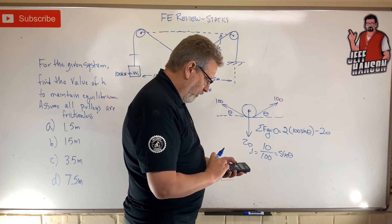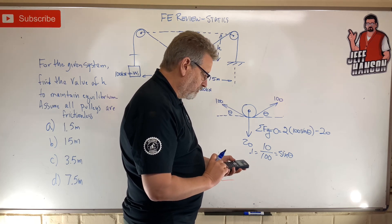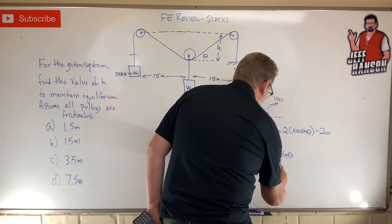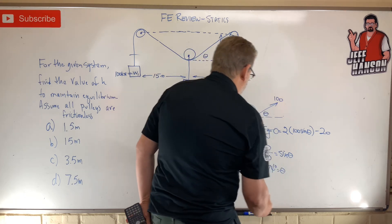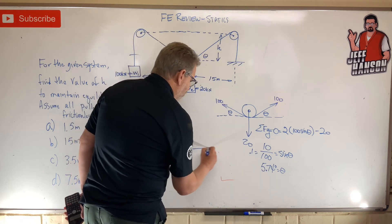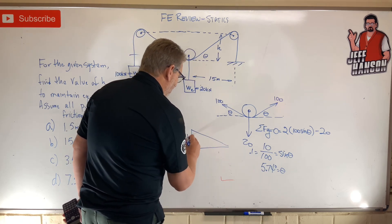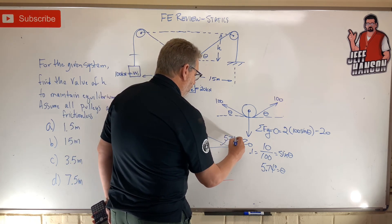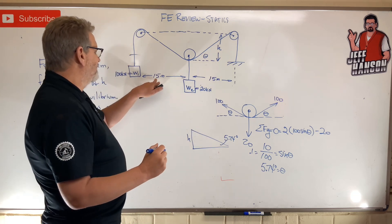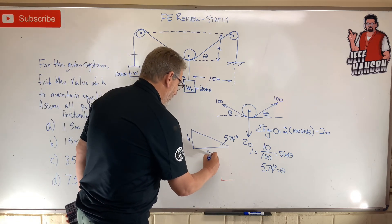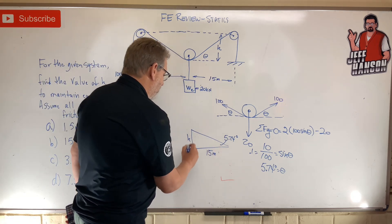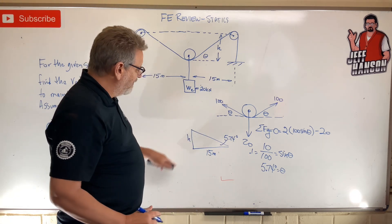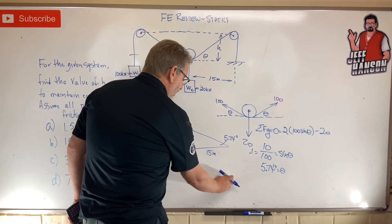Using our calculator, inverse sine of 0.1 equals 5.74 degrees. So now we have a triangle: here's H, here's the 5.74-degree angle, and this side is given as 15 meters. I know the adjacent side and I'm looking for the opposite side — that sounds like a good job for tangent.